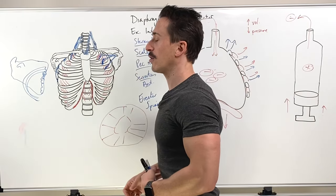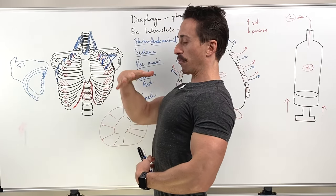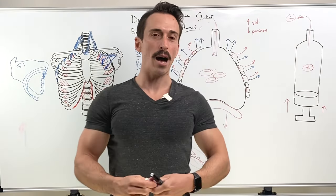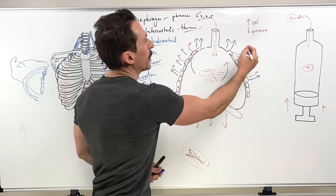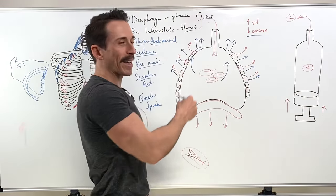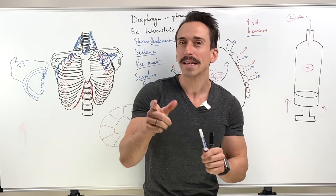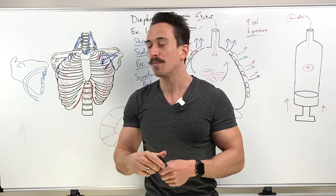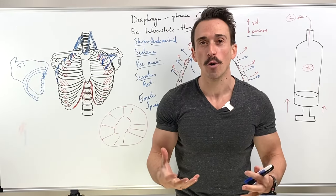And its job is when it contracts, you extend. Now look what happens. I contract my erector spinae muscles. My thoracic cavity moves up, increasing thoracic volume, decreasing pressure, more air comes in. These are the muscles that we use for quiet inspiration and also for when we need to recruit accessory muscles for forced inspiration.